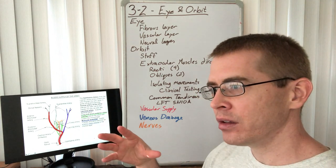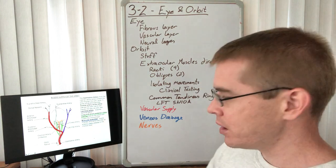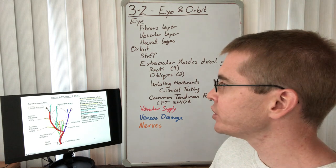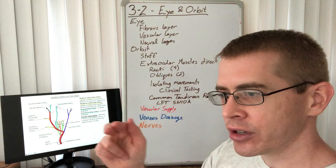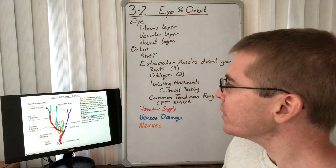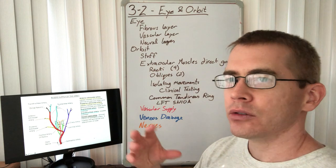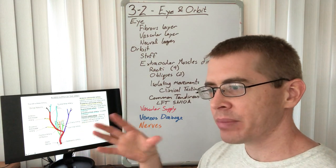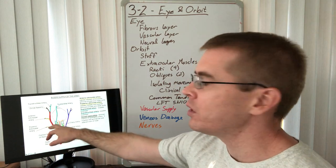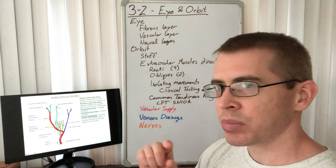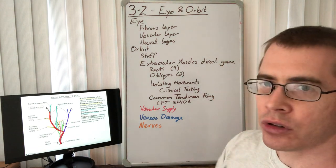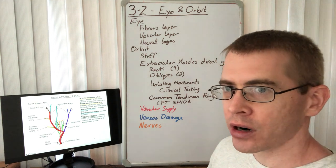There are long and short ciliary arteries named based on how far they travel within the eye itself, not based on their length in the orbit. The ophthalmic artery also gives off supraorbital and supratrochlear arteries, which travel with their corresponding nerves, as well as anterior and posterior ethmoidal arteries supplying the ethmoidal air cells. The two terminal branches are the dorsal nasal artery and the supratrochlear artery.